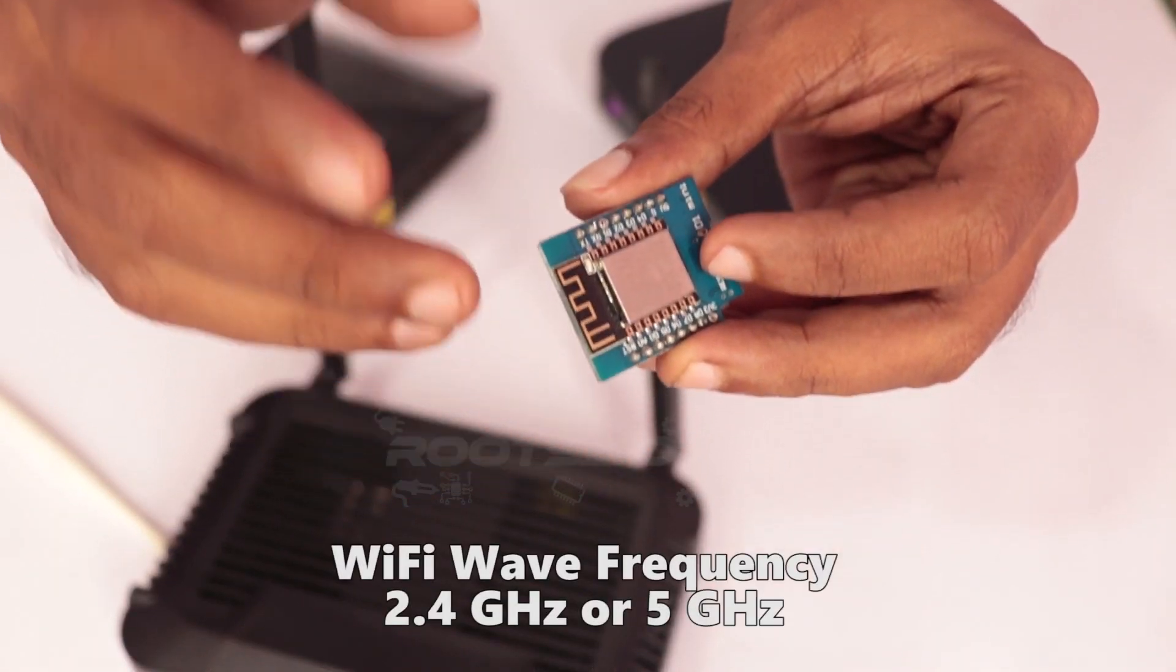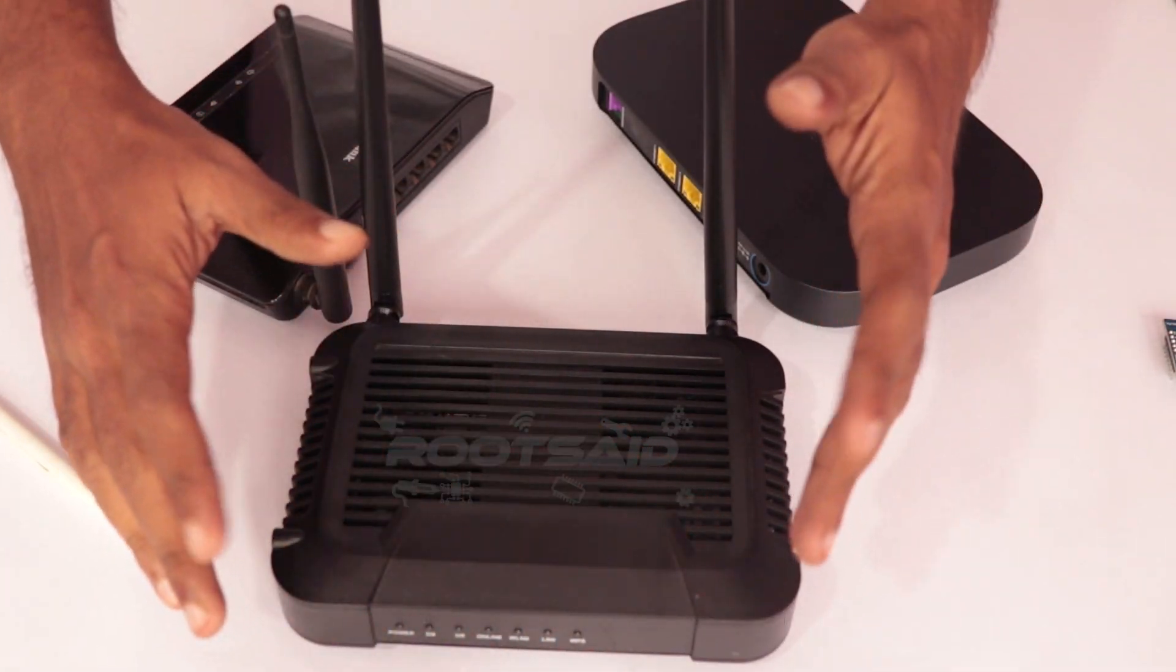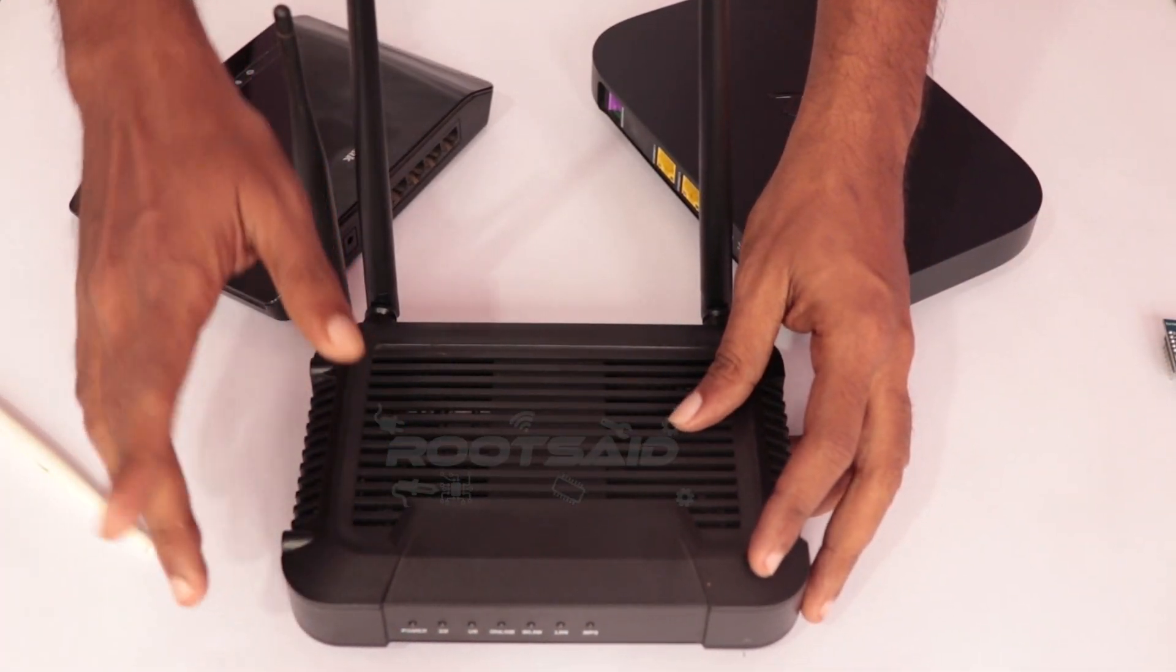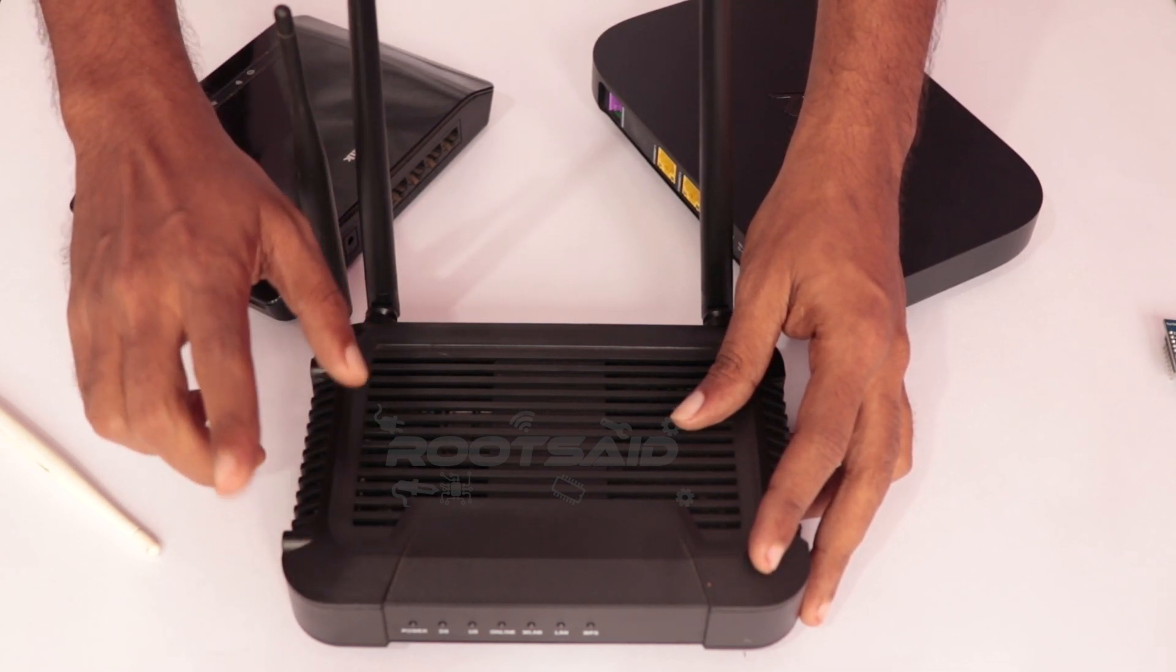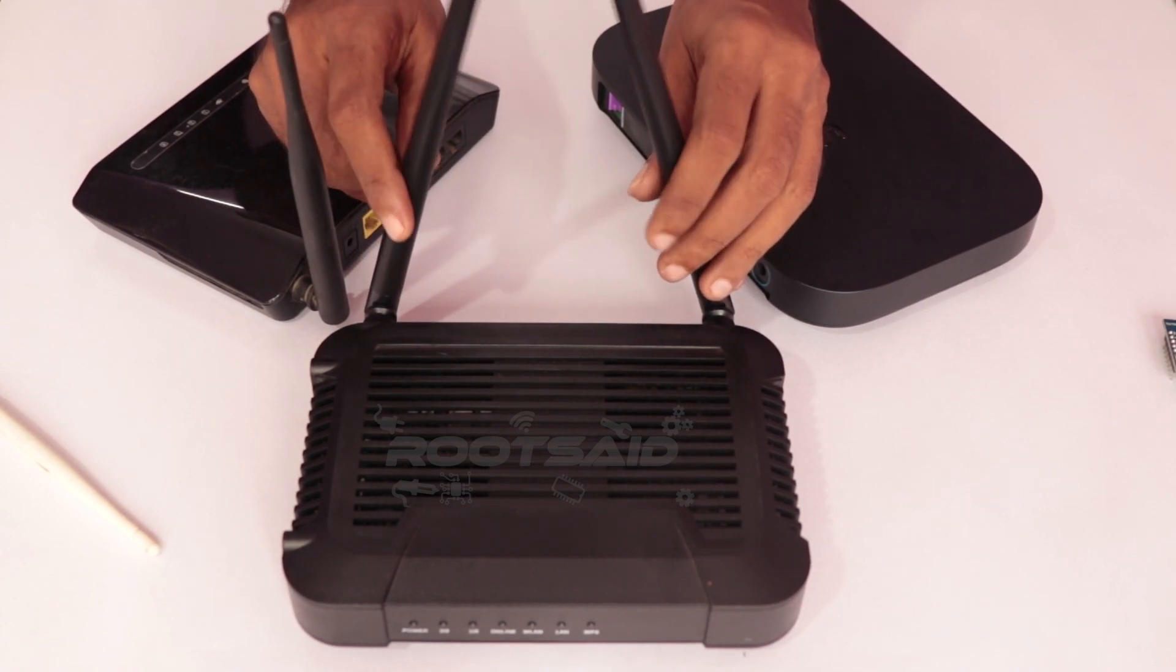Wifi uses a frequency of 2.4 GHz or 5 GHz. As mentioned earlier, the antennas are designed depending upon the frequency of the signal to be transmitted or received, which means we cannot use 2.4 GHz antenna in the place of 5 GHz antenna and vice versa.